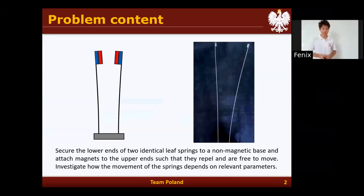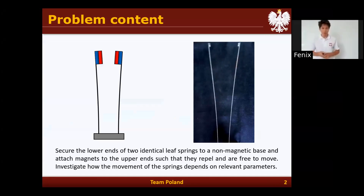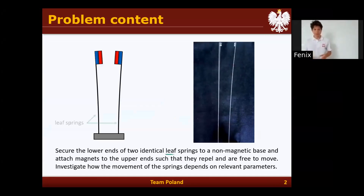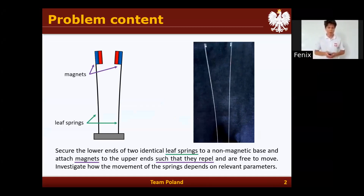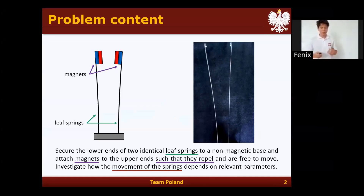The problem content states: secure the lower ends of two identical leaf springs to a non-magnetic base and attach magnets to the upper ends, such that they repel and are free to move. Investigate how the movement of the springs depends on the relevant parameters.